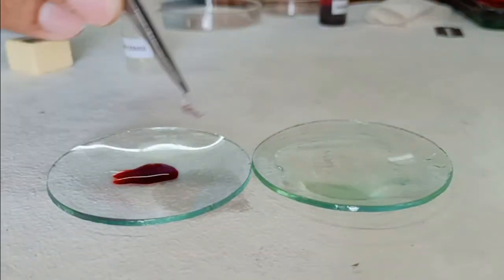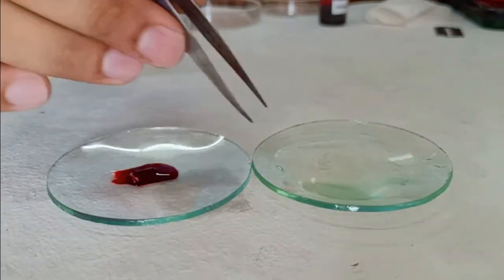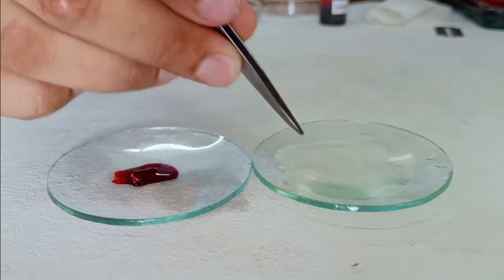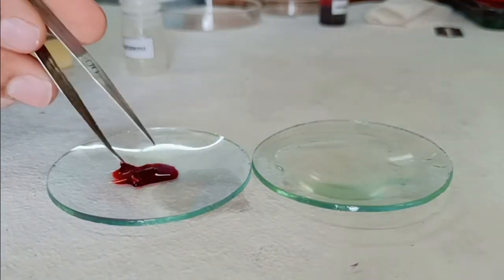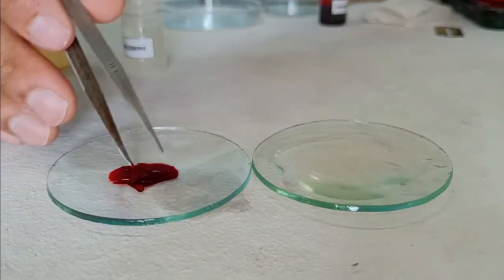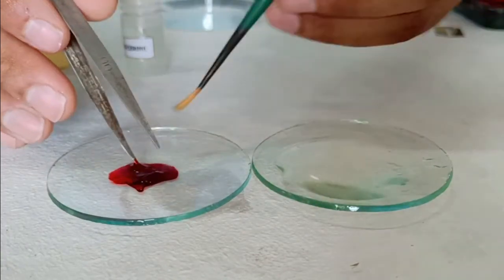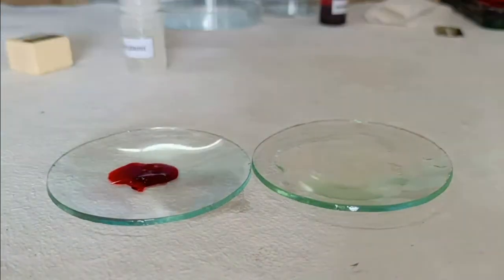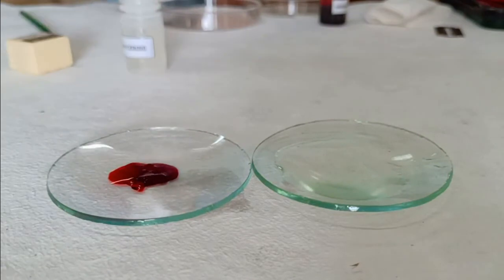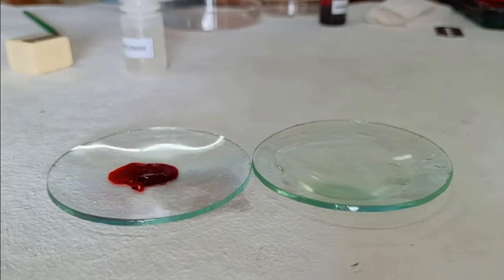Take a small amount of safranin in your watch glass and transfer the peel from water to safranin. We will keep our peel in this stain at least for 30 seconds. Timing may vary from 20 seconds to 1 minute depending upon the material and quality of stain.